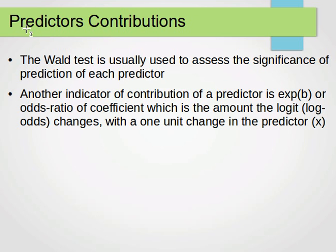To get the predictor contribution, predictors which are our variables, our independent variables, the Wald test is usually used to assess the significance of prediction of each predictor. Another indicator of contribution of a predictor is the exponent to b or the odds ratio of coefficient which is the amount the logit changes or the log odds changes. So if the predictor changes by one unit, the x variable changes by one unit, how much change do we get in the logit or the log odds? I hope this makes sense. Again, unfortunately, we don't have an example for things to make sense but hopefully this will be a way for you to get your head around logistic regression.